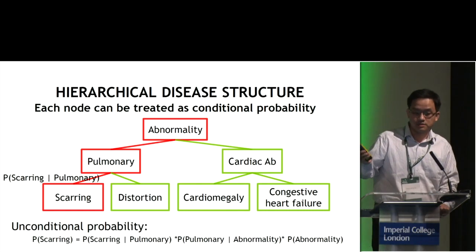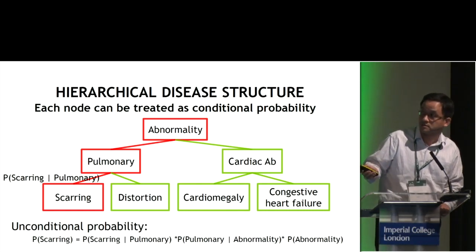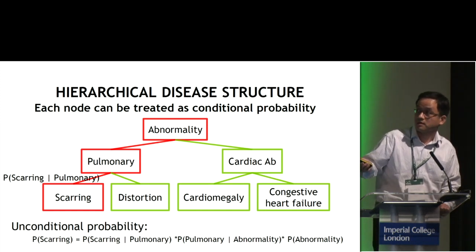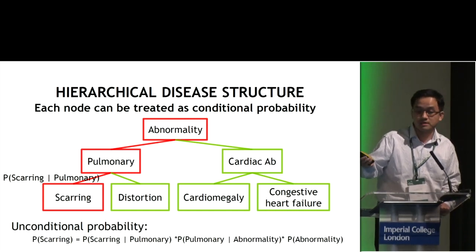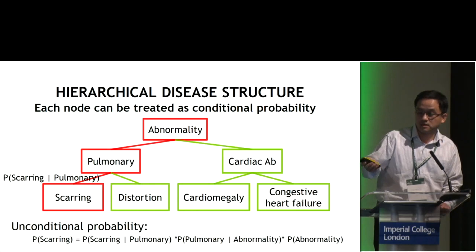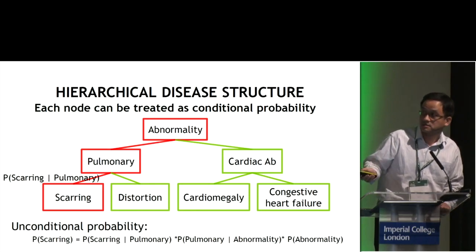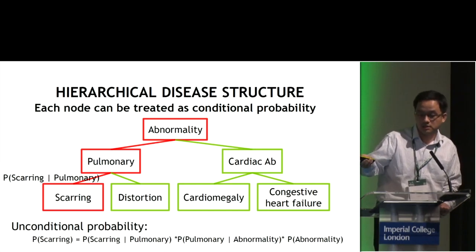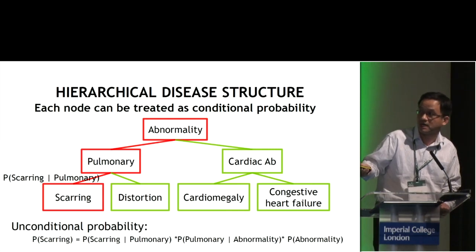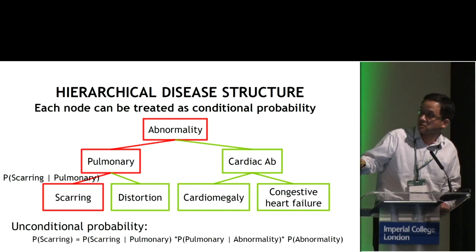When we design this tree structure, each node can be treated as a conditional probability. For example, the scarring node represents P(scarring | pulmonary), and the pulmonary node represents P(pulmonary | abnormality). Previous methods used unconditional probability — just P(scarring). It is very easy to convert from conditional to unconditional probability by taking the product of probabilities. So P(scarring) = P(scarring | pulmonary) × P(pulmonary | abnormality) × P(abnormality). Each node's unconditional probability is the product of itself and all its ancestors.